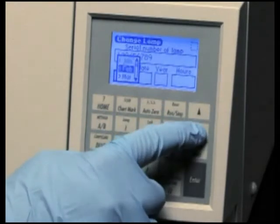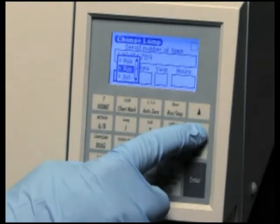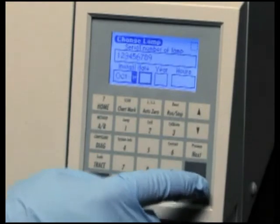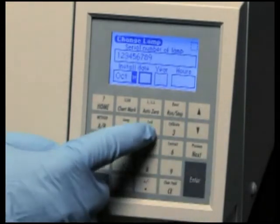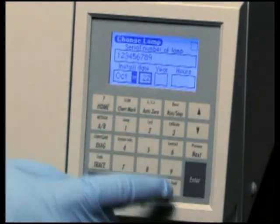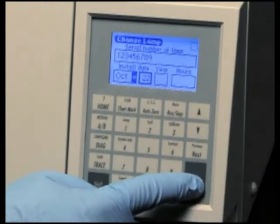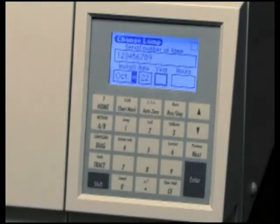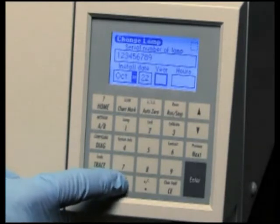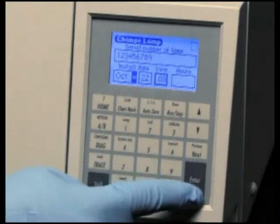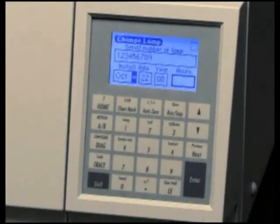Press Enter and scroll down to select the correct month. Press Enter. Enter the number for the day of the month the lamp is installed and then press Enter to accept this date and to move on to the Year field. Enter the last two digits of the year and press Enter to accept the entry and to move to the Hours field.